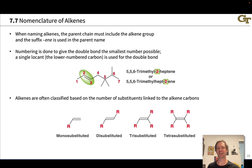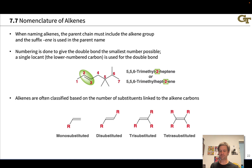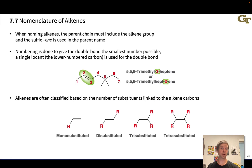Given that elimination reactions of alkyl halides form alkenes, it's prudent to take a moment and talk about the structure, nomenclature, and stability trends of alkenes. When we name alkenes, the parent chain includes the carbon-carbon double bond and has the suffix '-ene' to note the double bond. We use a locant number to indicate where the double bond appears in the chain, numbering to give it the smallest number possible.